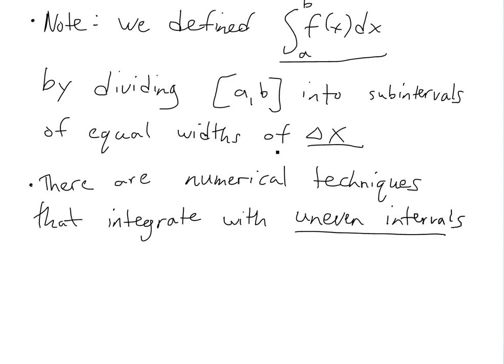But there's also numerical techniques that you can basically do with uneven, you know, uneven intervals, here, because there are sometimes cases where this delta x is not always the same. You could have something like delta x_1, then delta x_2, et cetera, all the way to delta x_n, and these ones are all different, here.